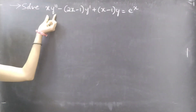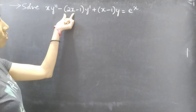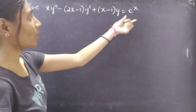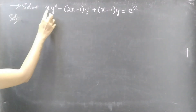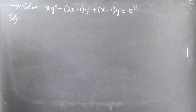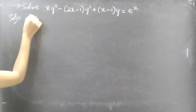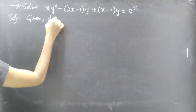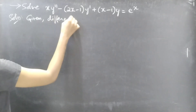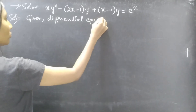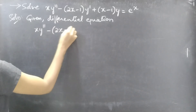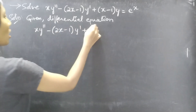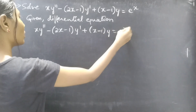Problem: Solve x·y'' − (2x − 1)·y' + (x − 1)·y = e^x. We are given a differential equation with variable coefficients, and this is a second order differential equation.